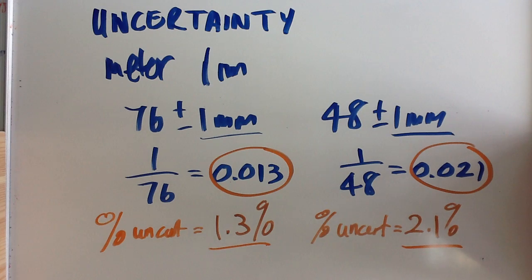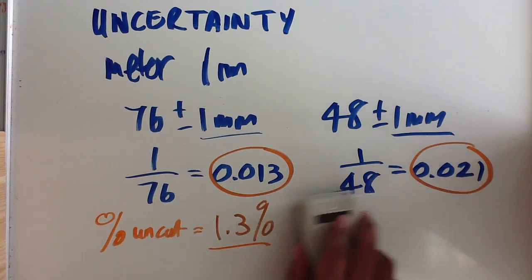Now, that is just for single readings. If you have a data set, your method is slightly different in working out what the percentage uncertainty is.